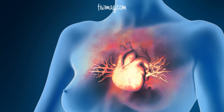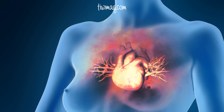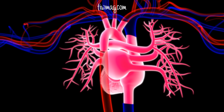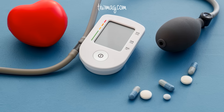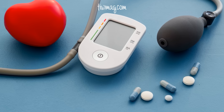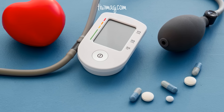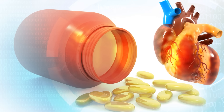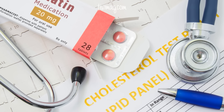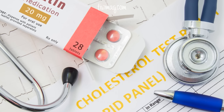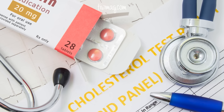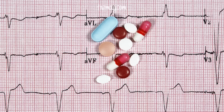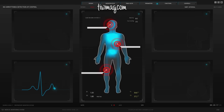Treatment of CSVD aims to relieve symptoms, improve heart function, and reduce the risk of future cardiovascular events. Treatment options may include: nitrates, which help relax and widen the blood vessels to improve blood flow; beta blockers, which reduce the heart's workload and improve blood flow by slowing the heart rate; calcium channel blockers, which help relax and dilate the small blood vessels; statins, which lower cholesterol levels and have anti-inflammatory effects that improve endothelial function; and ACE inhibitors or ARBs, which help lower blood pressure and improve heart function.